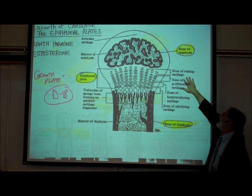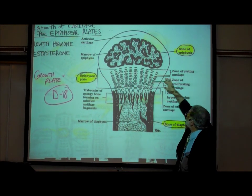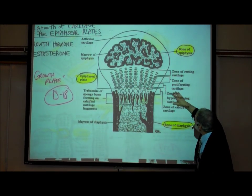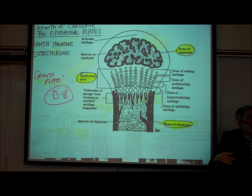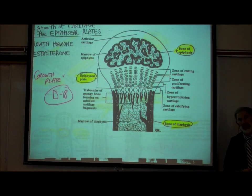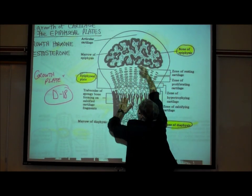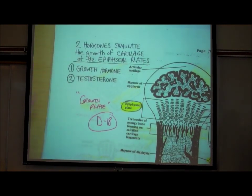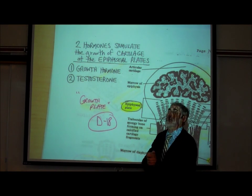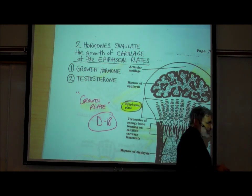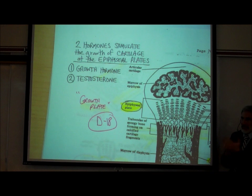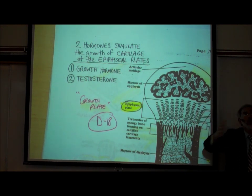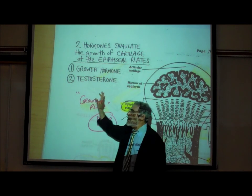At the epiphyseal plate there are zones: resting cartilage, proliferating cartilage, hypertrophying cartilage, and calcifying cartilage where it's ossifying into bone tissue. The bone grows in length from this region. There are two hormones that stimulate growth of hyaline cartilage at the epiphyseal plate, promoting more rapid lengthening: growth hormone and testosterone.